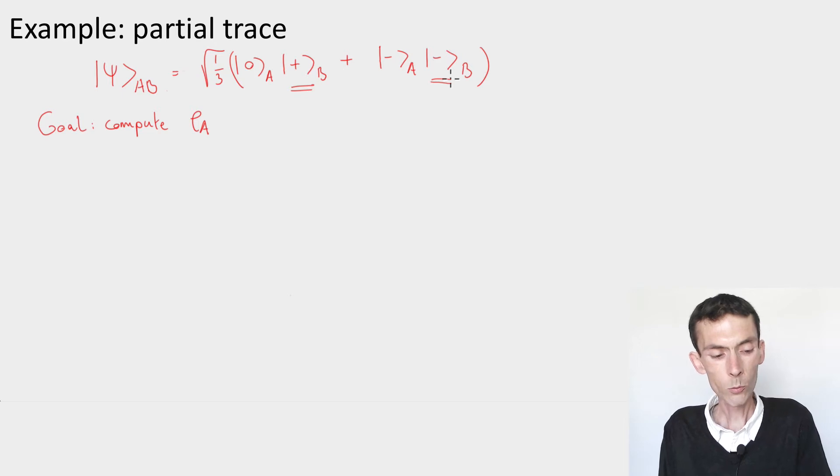So it makes sense that if we want to work with that state, psi AB here, and we want to think about the B system, we should use the Hadamard basis.